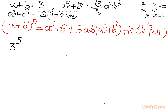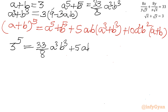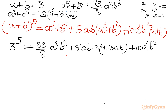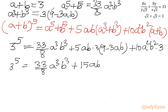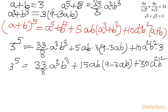Applying these values: 3 to the power 5 equals 33 over 8 times a cubed b cubed, plus 5ab times 3 times bracket 9 minus 3ab, plus 10 a squared b squared times 3. Simplifying: 3 to the power 5 equals 33 over 8 times a cubed b cubed, plus 15ab times bracket 9 minus 3ab, plus 30 a squared b squared. Now I can divide this equation by 3, leaving 3 to the power 4 equals 11 over 8 times a cubed b cubed.